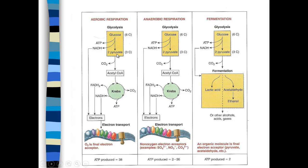Then you go through what's called the preparatory reaction, where pyruvate — with three carbons — gives up carbon dioxide and forms acetyl-CoA, which has two carbons. That happens in aerobic and anaerobic respiration. Then you have the Krebs cycle, which produces more carbon dioxide, produces ATP itself, and then electron carriers FADH2 and NADH.